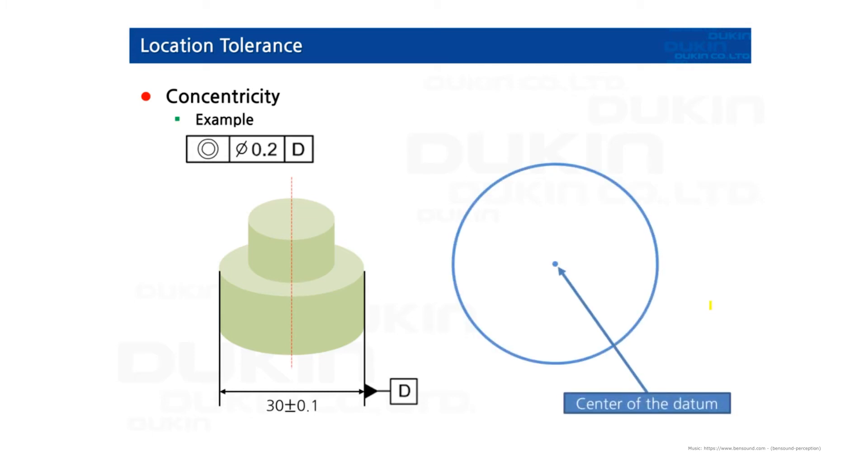So you can see a center of the datum which is datum D and the center of the circle that we measure here. And you can see this picture right here. It's exactly the same as the position tolerance. So the concept is exactly the same actually.